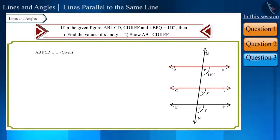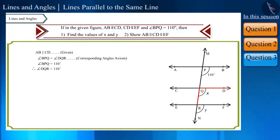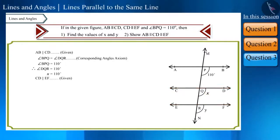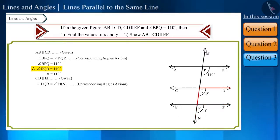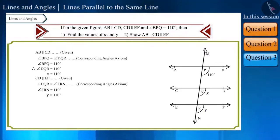We are given that line AB is parallel to line CD. Therefore, according to the corresponding angles axiom, angle BPQ and angle DQR will be equal. The measure of angle BPQ is 110 degrees, so angle DQR will also be 110 degrees — that is, the value of X is 110 degrees. Since line CD is parallel to line EF, by the corresponding angles axiom, angle DQR and angle FRN will be equal. So the measure of angle FRN will also be 110 degrees, meaning Y is equal to 110 degrees.